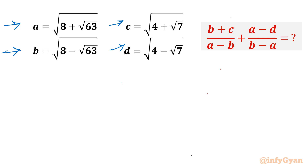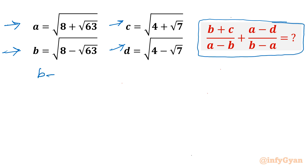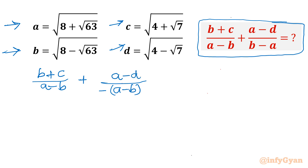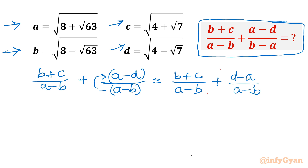Let us get started by considering the expression first. I can write (b+c)/(a-b). Then, taking minus common from the second denominator, I can write minus(a-b) in the denominator, so it becomes (a-d) over minus(a-b). Taking the minus into the bracket gives (d-a)/(a-b). Now the denominator is the same, so I write the addition in the numerator: (b+c+d-a)/(a-b).